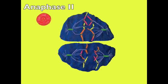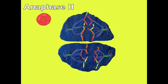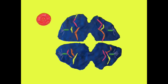During anaphase II, the sister chromatids break apart from each other, which then move to the opposite poles of the cell through the spindle fibers.